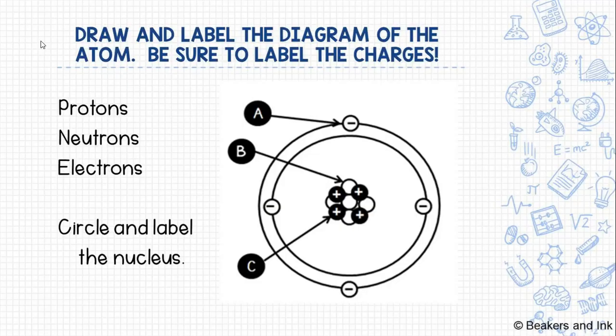Let's take a look at this diagram of the atom. You have protons, neutrons, and electrons, A, B, and C. Go ahead and take a second, pause the video, and label which is which, and circle and draw an arrow to the nucleus. Okay, let's get started.